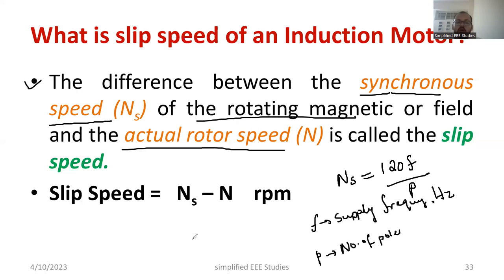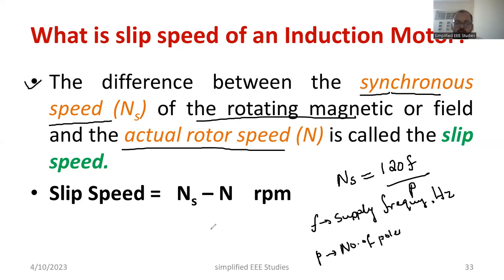After induction, an EMF is induced at the rotor. If the rotor is short-circuited or if the rotor path is closed, there is a production of torque developed at the rotor. At that time, the rotor slowly starts rotating. The speed of the rotor is represented as N, which is the actual rotor speed.